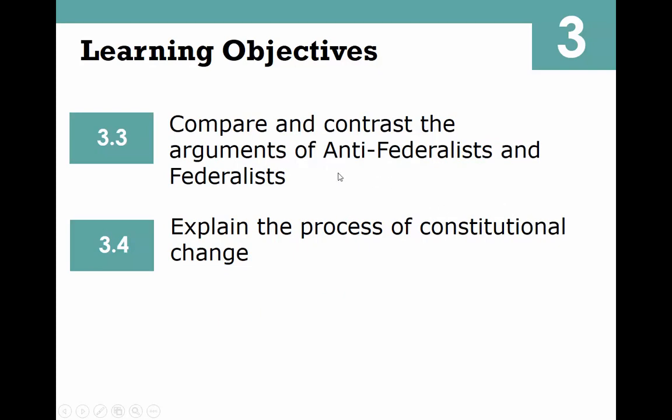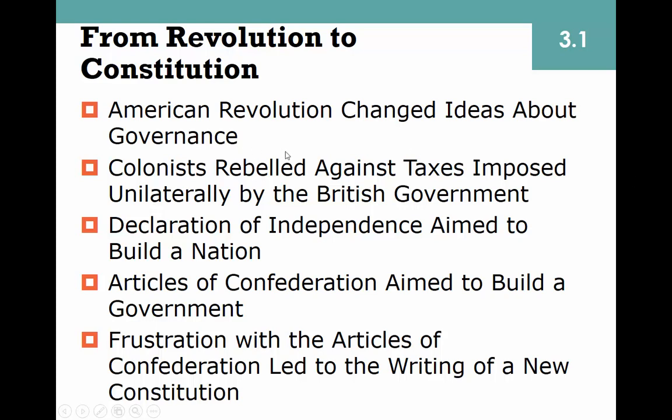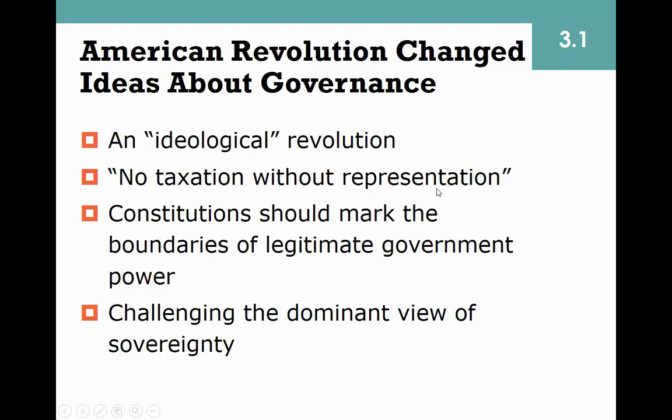We're going to look at some of the problems that the Framers faced as they attempted to create this brand new Constitution. It started with the Articles of Confederation, and we'll see that those did not work for the American government and they had to start over. We're also going to compare and contrast the arguments of the Anti-Federalists to the Federalists, and we will explain the process of amending the Constitution.